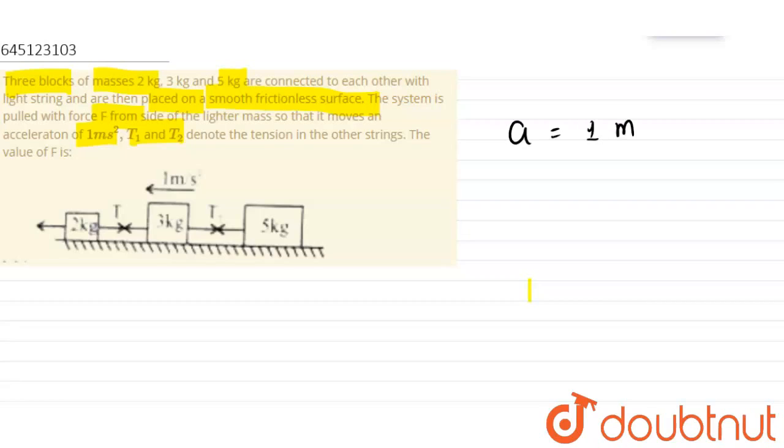If we do this question, it's a simple question. We have to solve for the whole system. The external force on the whole system is F. The tension in the strings are internal forces, so we don't need to consider them. For the external forces, F equals MA. F equals MA.